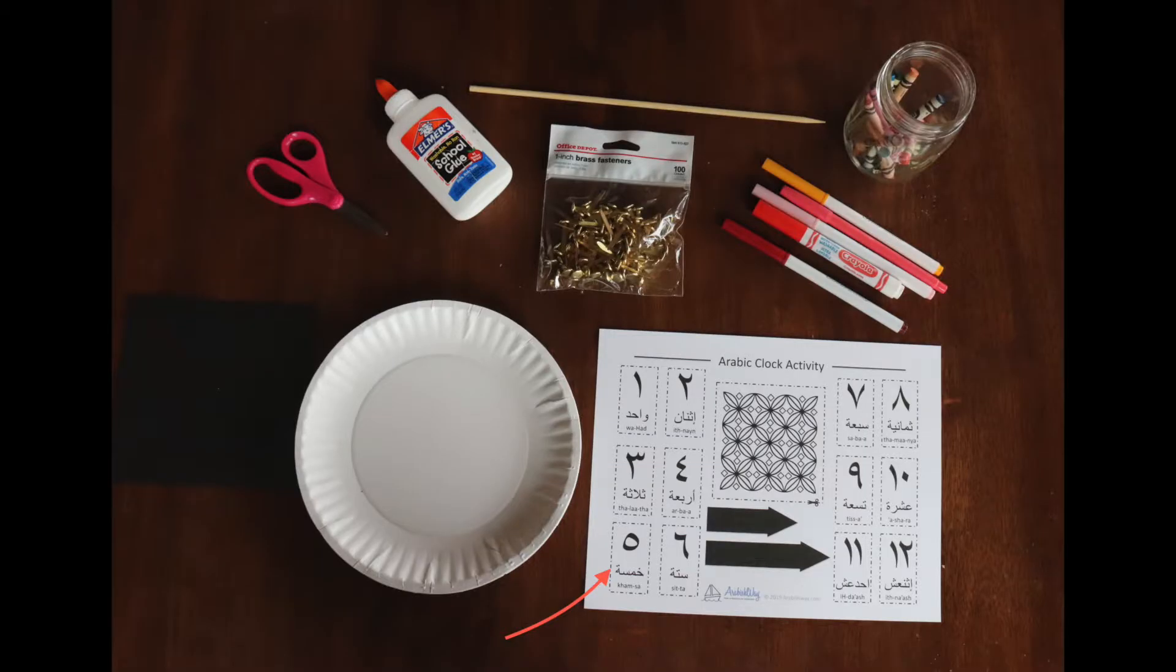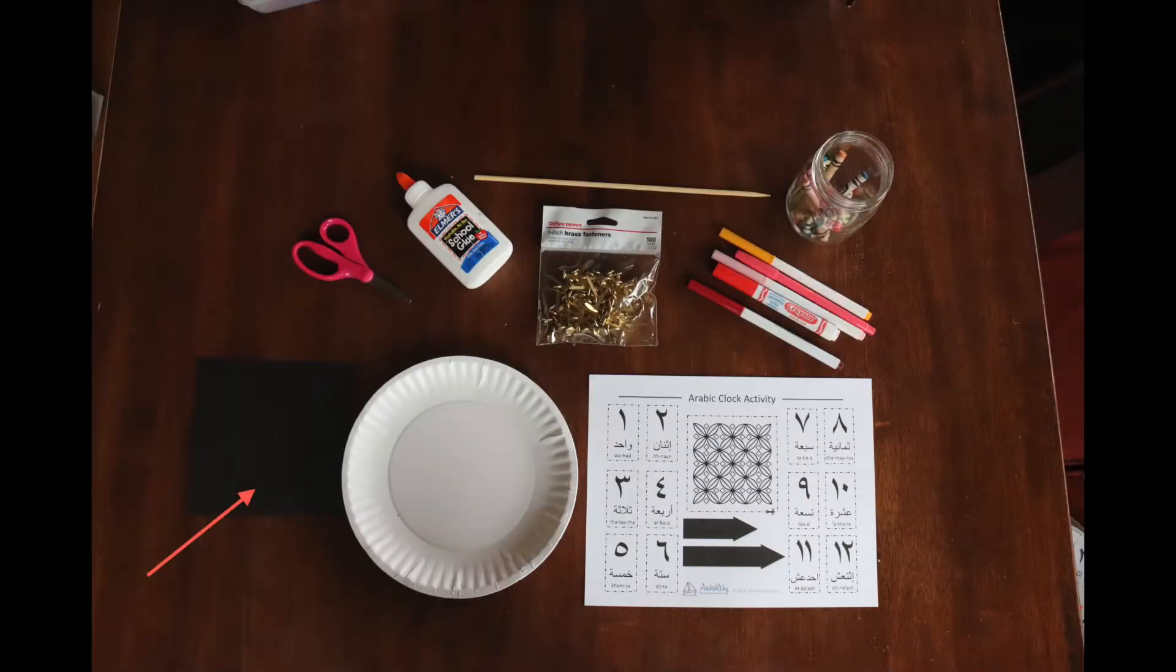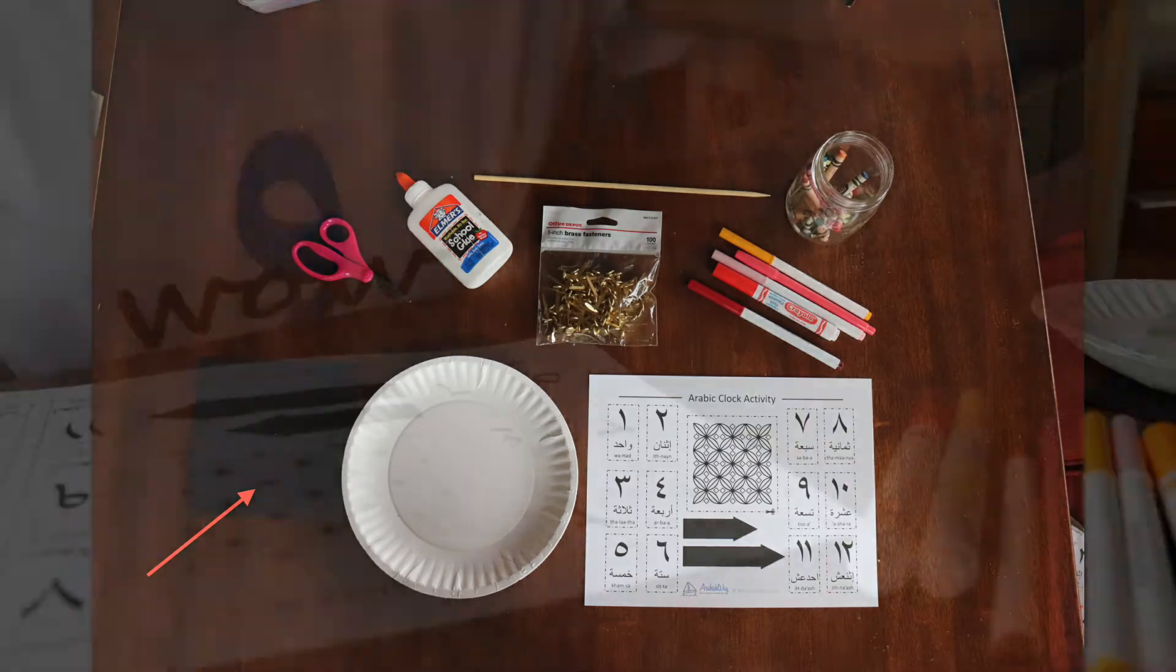You will need the PDF printout of the clock activity, which I will tell you where to get at the end, some colors - could be markers, crayons, colored pencils, really anything - some scissors, a paper plate or an 8-inch circle or larger, some glue and a pokey stick to make a hole with, a brass fastener (you just need one), and some cardstock for the arrows if you want something a bit more sturdy.